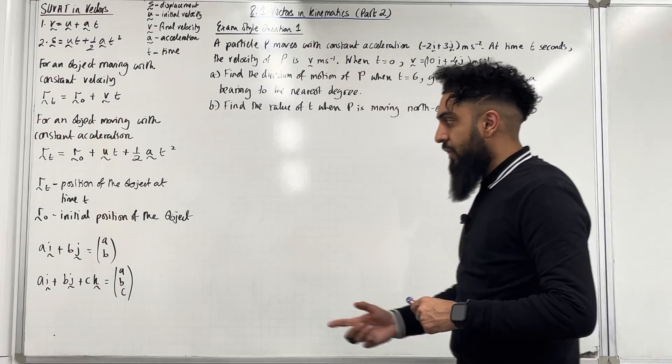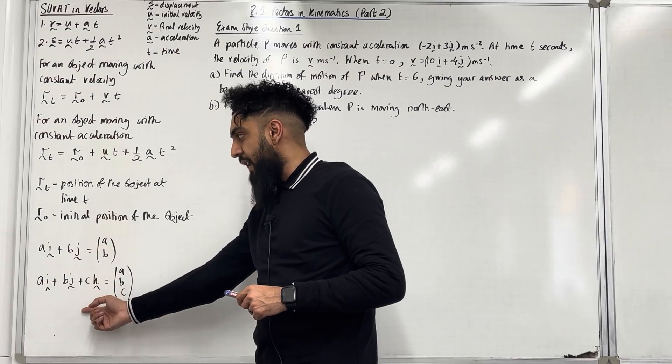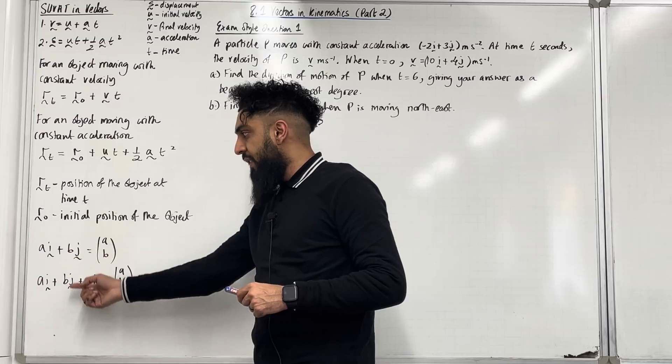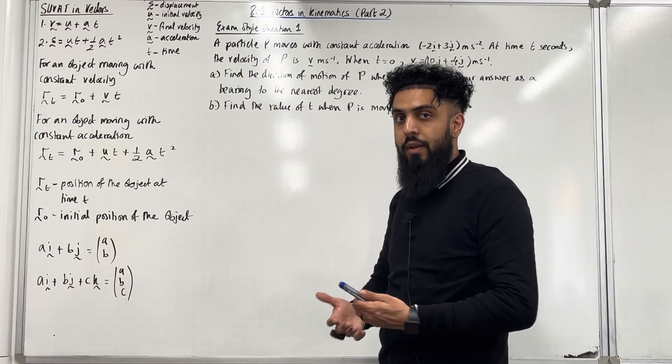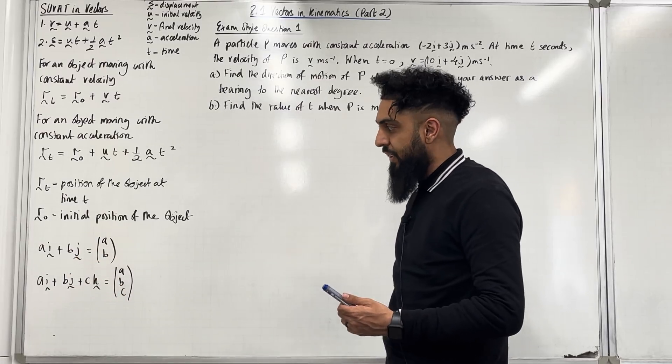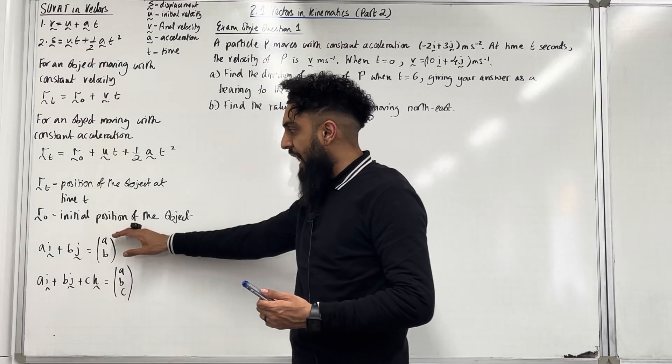We have a two-dimension vector and a three-dimension vector. Both of these vectors can be rewritten as a column vector for simplicity — (A, B) for 2D and (A, B, C) for 3D.